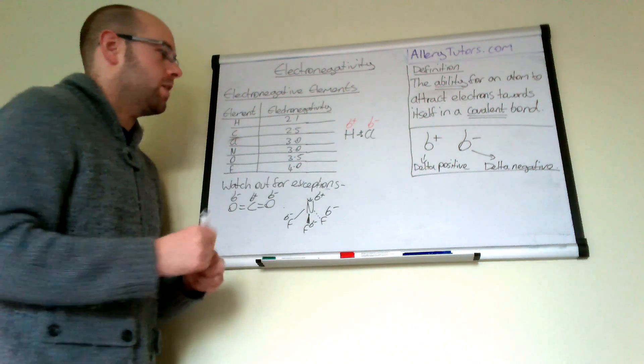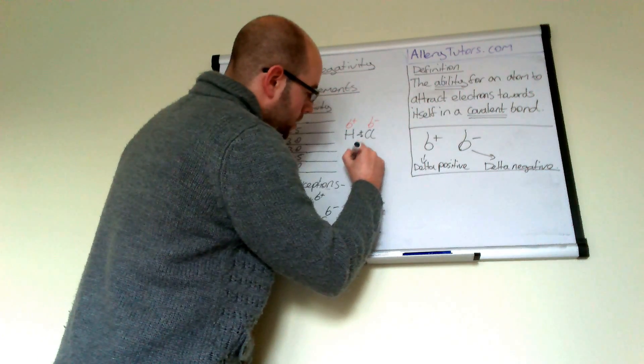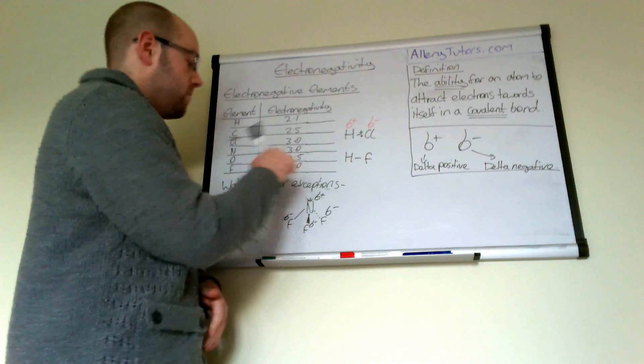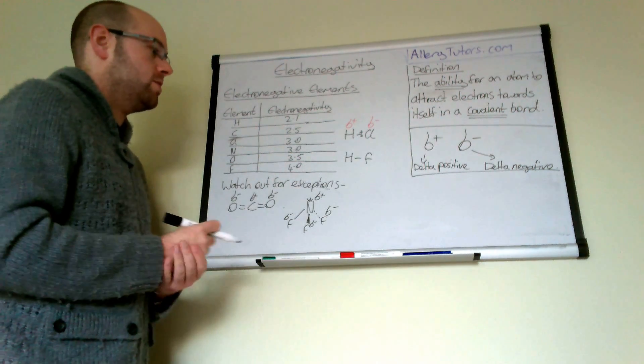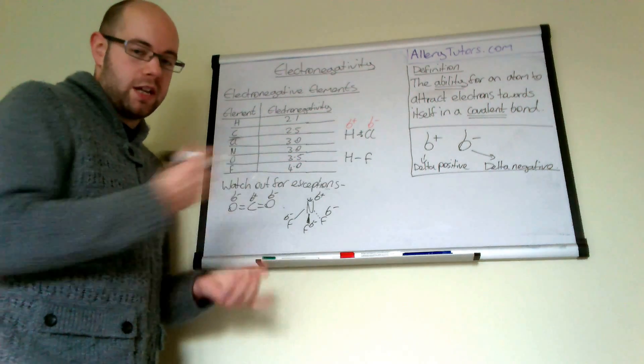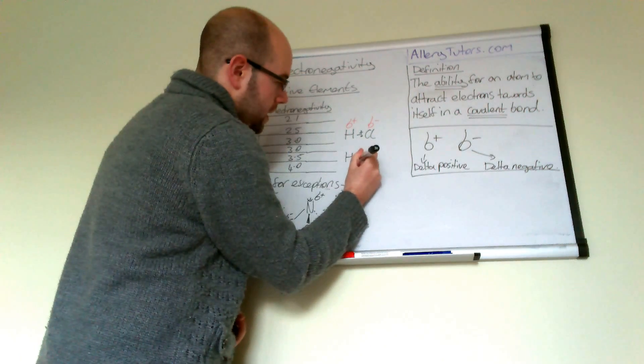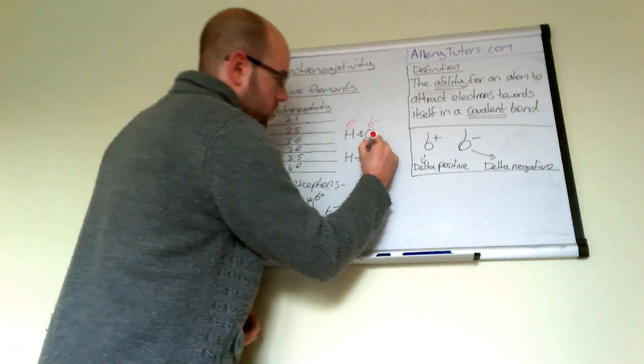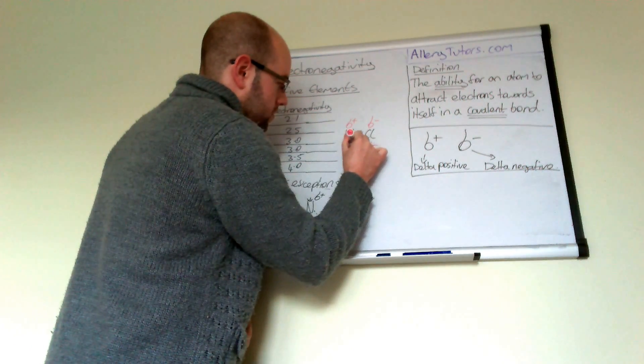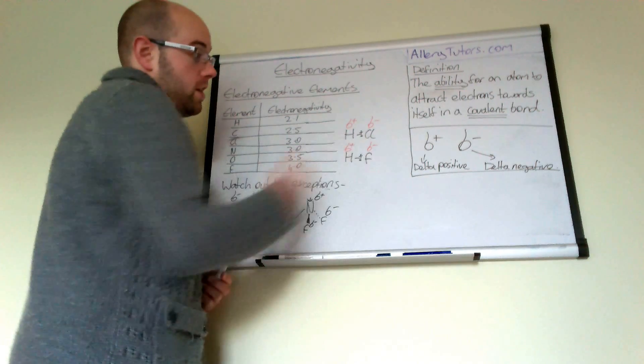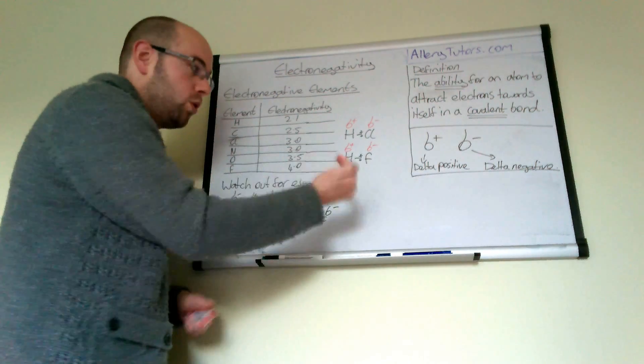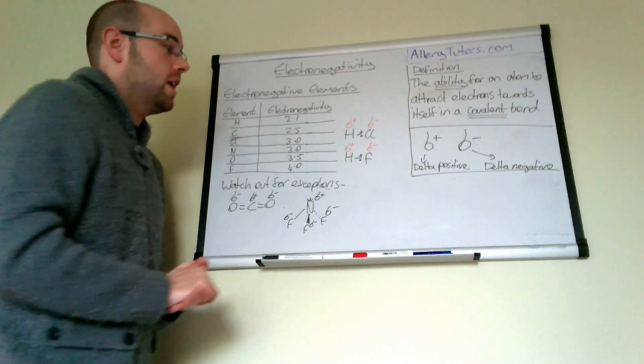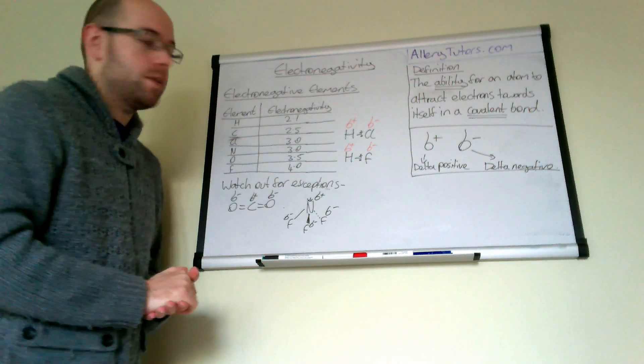If we do a different one—HF, which is hydrogen fluoride—again, fluorine is very electronegative and very willing to accept the electrons when they're being shared. So again, the polarity is there: fluorine would have a delta negative charge and hydrogen has the delta positive, with the electrons being pushed more towards the fluorine side.